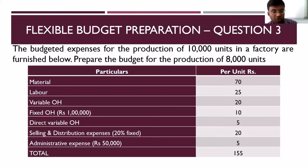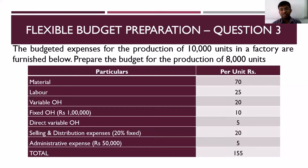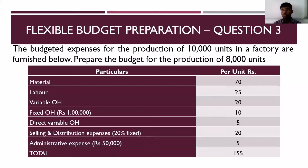In this session we'll be focusing on another question where we will be preparing flexible budgets. The budgeted expenses for the production of 10,000 units in the factory are furnished below. We need to prepare the budget for production of 8,000 units. They've given us the cost related to manufacturing 10,000 units and we're expected to prepare the flexible budget for 8,000 units. Let's look at the costs one by one.